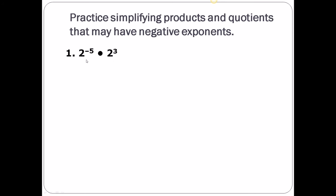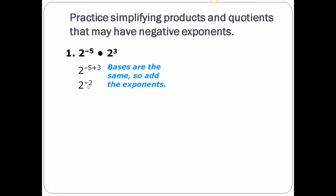Let's try one. We have the same base, so we add the exponents: negative 3 plus 5 is negative 2. Do not leave a negative exponent. So we take the reciprocal: 1 over 2 to the positive 2 power. Two squared is 1/4 — that's your answer. We used the multiplication rule: same base, add your exponents.